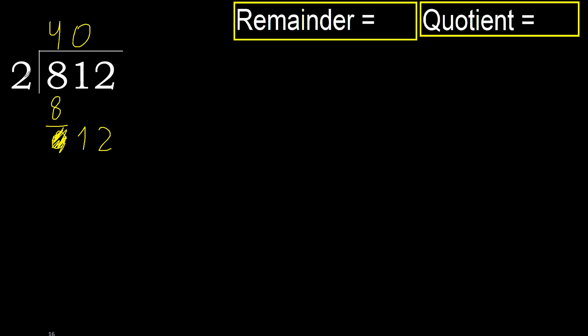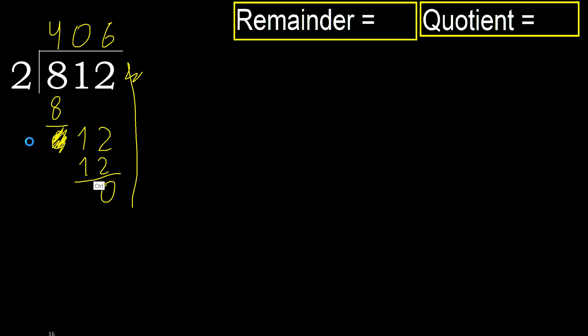2 multiplied by 7 is 14, which is greater. Multiplied by 6 is 12, which is not greater. Subtract. Next — there is no number remaining, therefore finish.